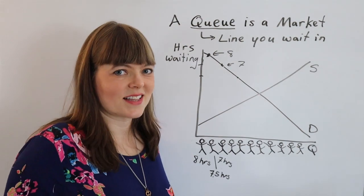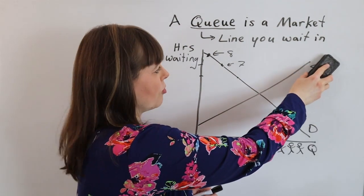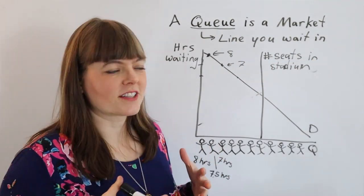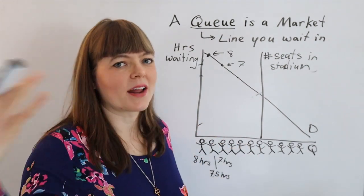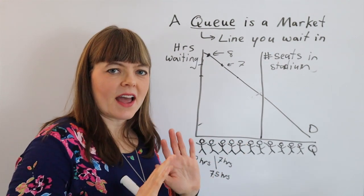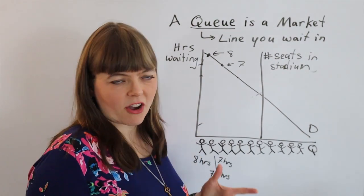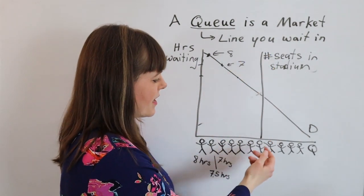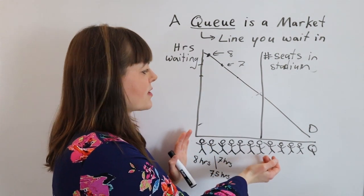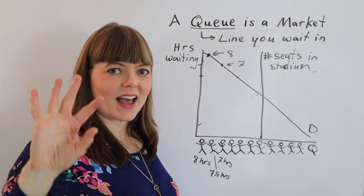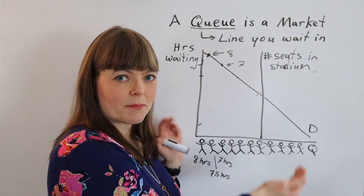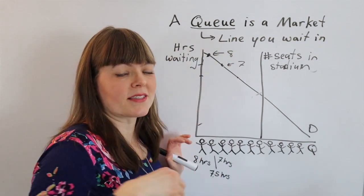There's a whole economic market that determines whether an artist should even have a concert — that would have an upward-sloping supply curve potentially. But once the concert is set up and costs are all sunk, you have a fixed number of seats in the stadium. The people willing to give up the most of their time are going to be the ones ending up in the stadium. So lines share that nice property of markets: the people getting the product are determined by who values it the most.